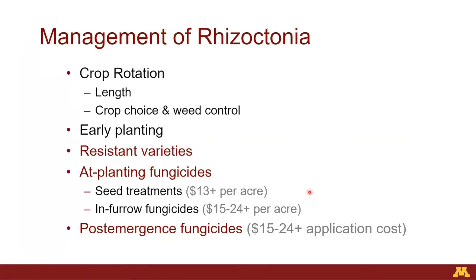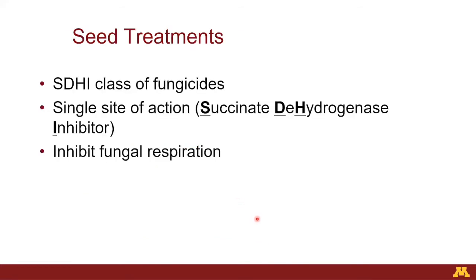When we think about rhizoctonia management, we already talked about choice of crop in the rotation and weed control. Most of you are already doing a three- to four-year rotation, but if you have a severe field, a four-year rotation is better. Early planting is really good because you're off to a good start and the soil is relatively cooler, which is not really favorable for rhizoctonia. Let's look at some trials from 2021. The results are very similar to previous years: use of resistant varieties, several options for seed treatments and in-furrow fungicides, as well as post-emergence fungicides. For seed treatments, since 2014 we've got several labeled that have excellent efficacy for rhizoctonia.